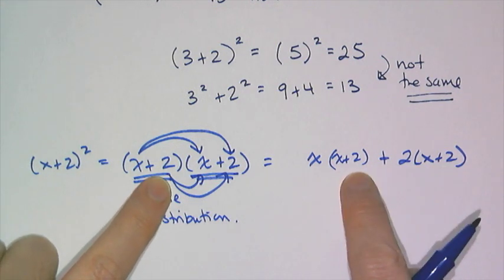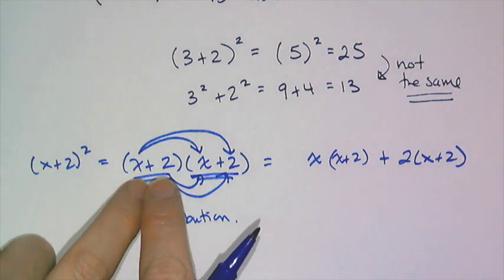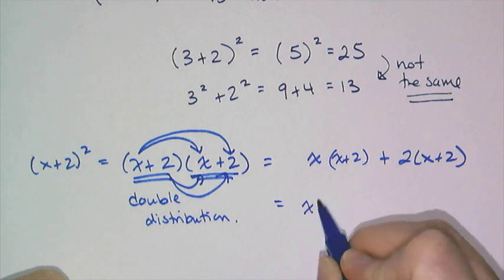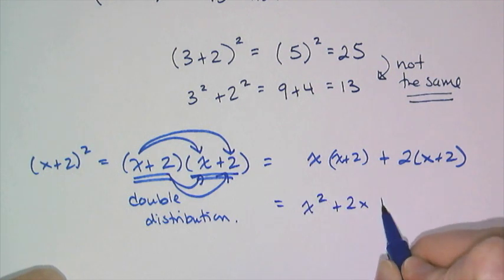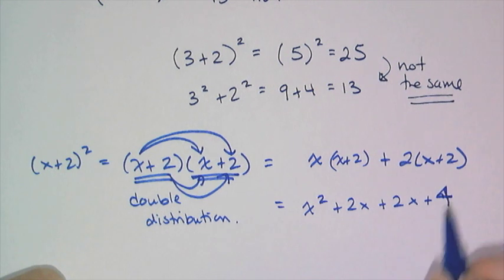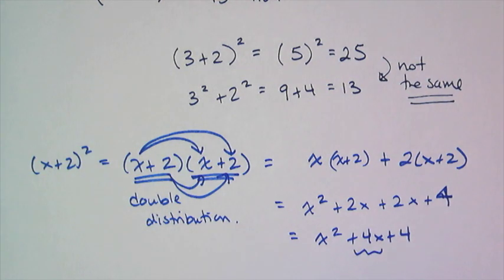So x times (x+2) plus 2 times (x+2) is the same thing as (x+2) times (x+2). When I simplify this I get x² plus 2x plus 2x plus 4, and then I get x² plus 4x plus 4.